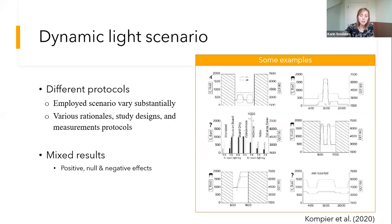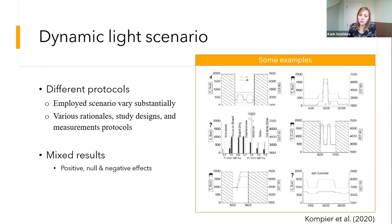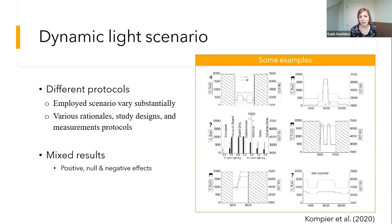If we look at the different methodologies, we see quite different protocols used in studies included in this systematic literature review. In total, 14 studies were included. When inspecting the employed lighting scenarios, we saw substantial variations in the levels used throughout the day. Some used boosts during the day with multiple peaks, some were more curvilinear following more gradual variations. We also see many different rationales for installing dynamic lighting and for choosing a specific lighting scenario.